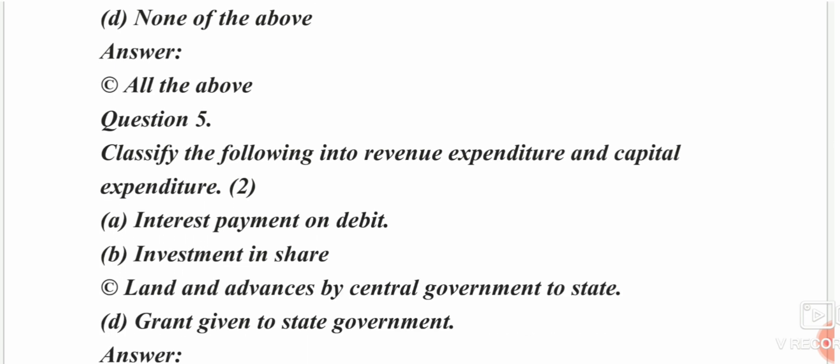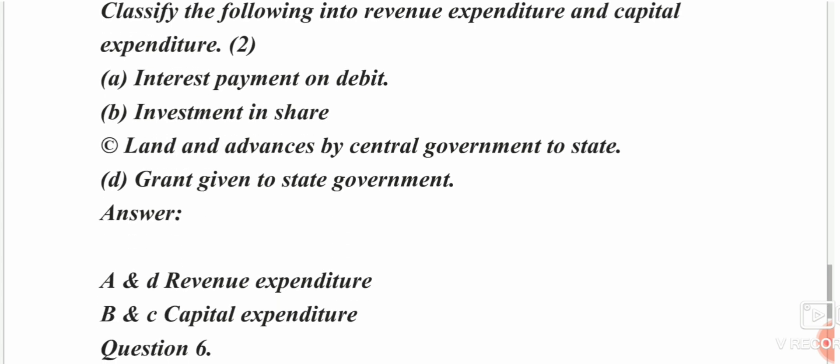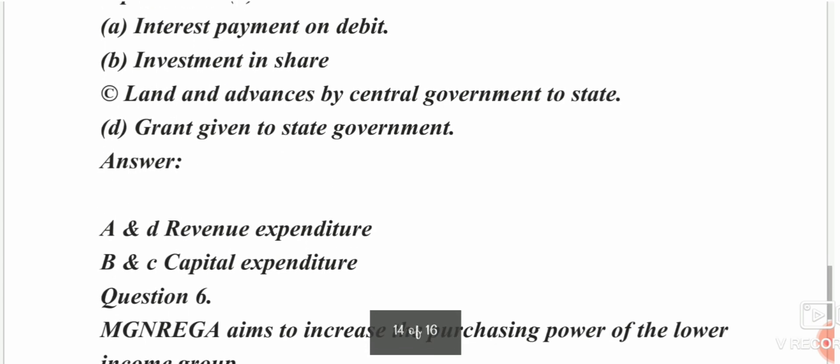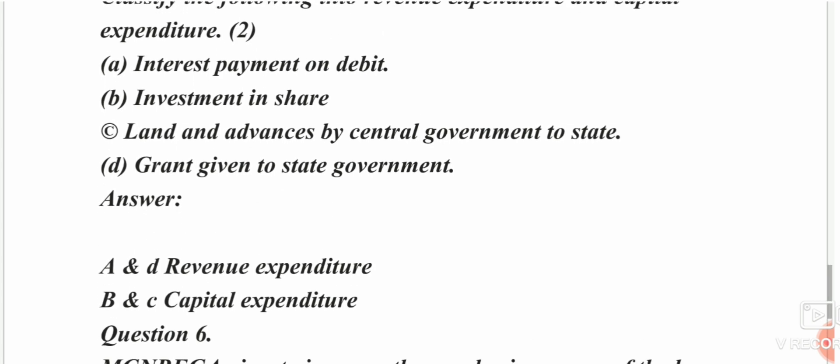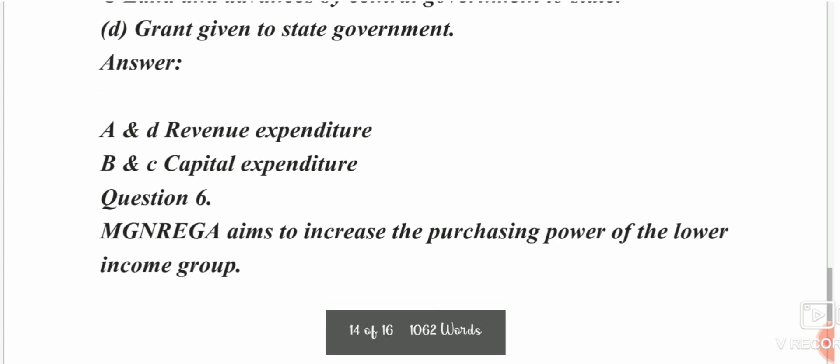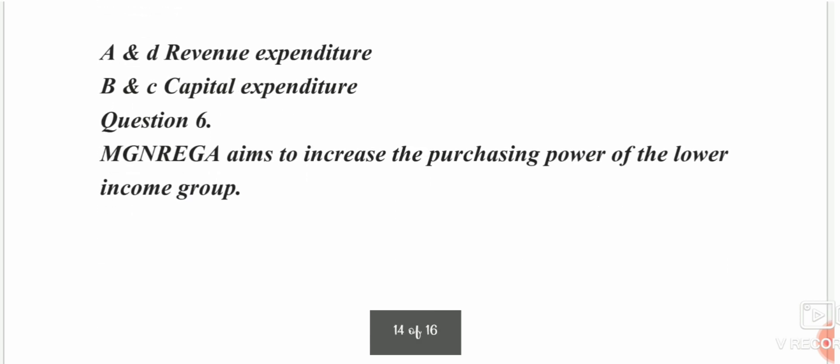Classify the following into revenue expenditure and capital expenditure. Interest payment on debt is revenue expenditure. Loans and advances by the central government to states — that is capital expenditure.